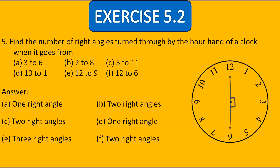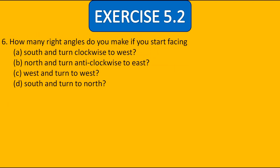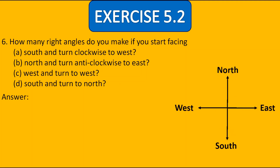Now the sixth question: How many right angles do you make if you start facing south and turn clockwise to west? Using the direction map, from south to west clockwise is one right angle. The answer is one right angle. For B, starting from north and turning anticlockwise to east — that is three right angles. The answer for B is three right angles.